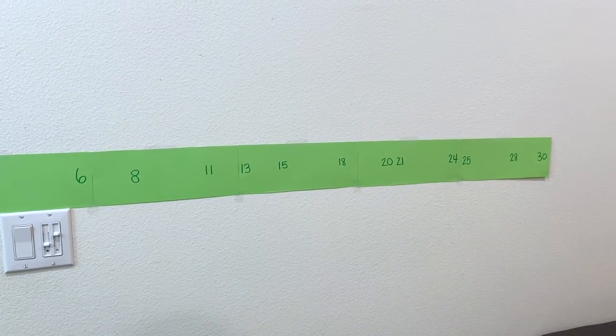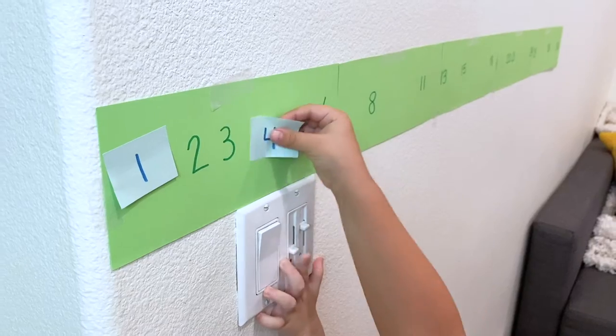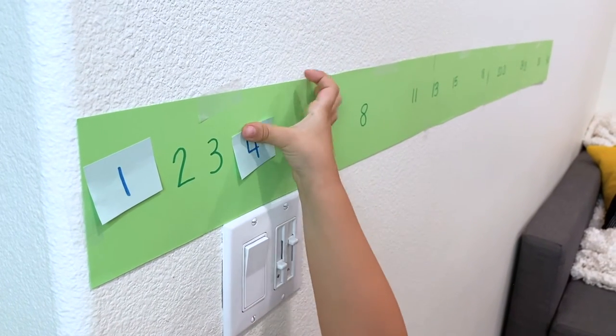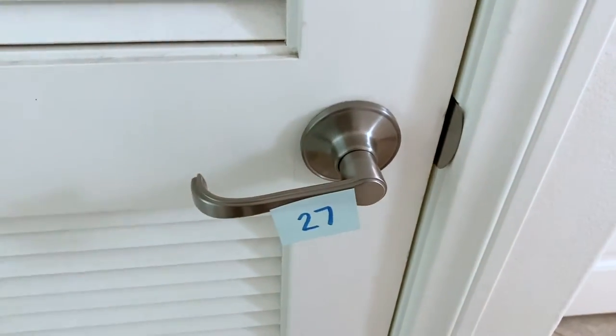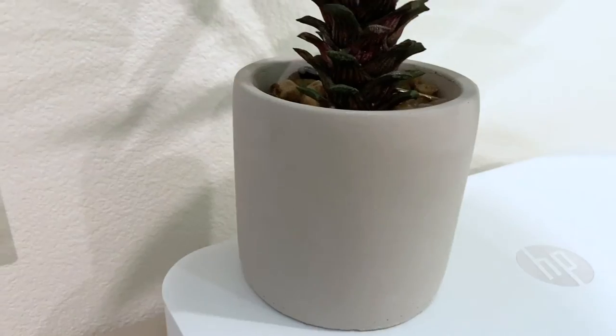Just make sure to create a number line that aligns with your little one's current level and make it enough of a challenge for them without making it too hard. We don't want to discourage them. Then write the missing numbers on sticky notes. Now it's time to play. Take your number line up and hide the sticky notes around the house.